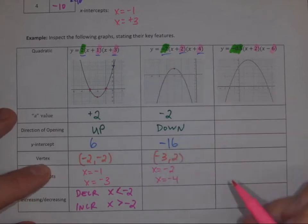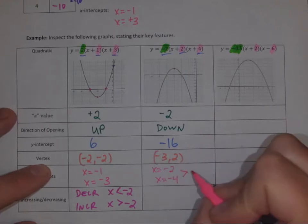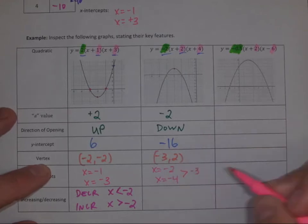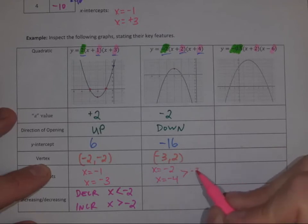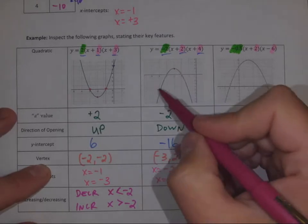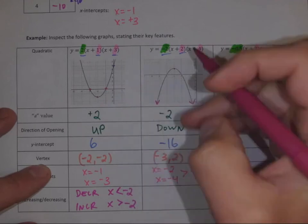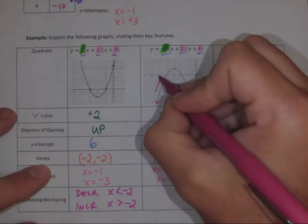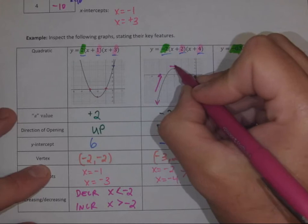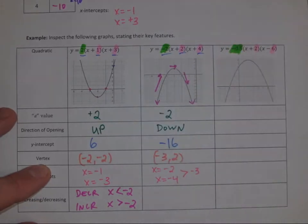The x-intercepts are x equals negative two and x equals negative four. Our vertex at negative three is midway between negative two and negative four — it's still the midpoint. All previous math still applies. Now it's opening down, so from left to right it goes uphill, is flat at the vertex, and then goes downhill.